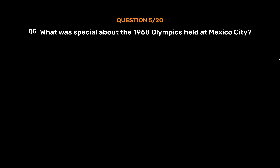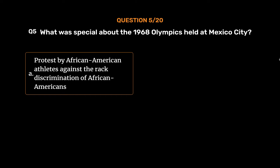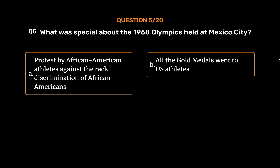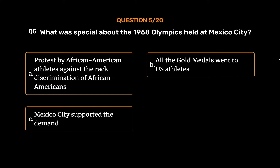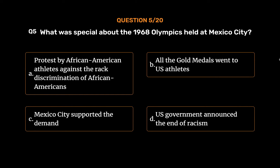Question number 5. What was special about the 1968 Olympics held at Mexico City? Option A: Protest by African American athletes against the racial discrimination of African Americans. Option B: All the gold medals went to US athletes. Option C: Mexico City supported the demand. Option D: The US government announced the end of racism.